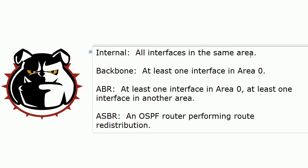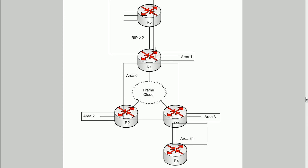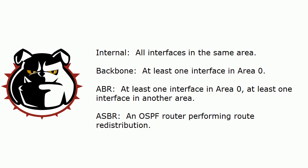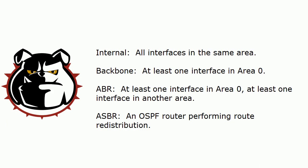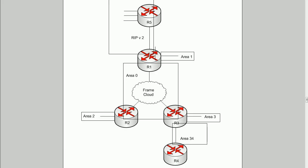The definition for internal router is all interfaces in the same area. So if we added a loopback to router four and put it in area four, it would no longer be an internal router. For backbone routers — at least one interface in area zero — routers one, two, and three are your backbone routers. For area border router, which requires at least one interface in area zero and at least one in another area, can routers one, two, and three be both backbone routers and area border routers? Yes, they can — routers can fill more than one of these roles. And the ASBR is router one, because that's where route redistribution is taking place.